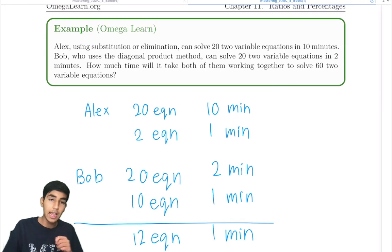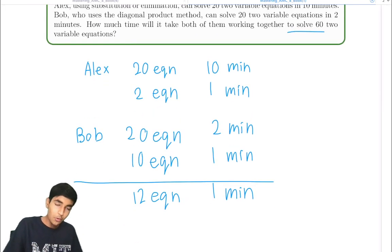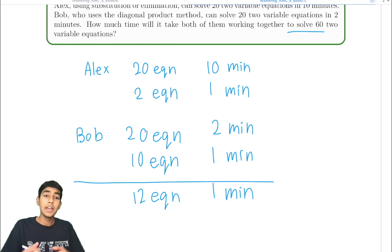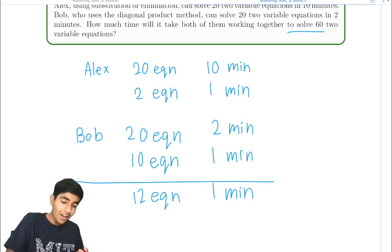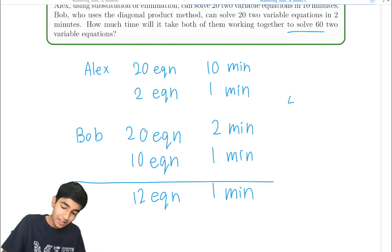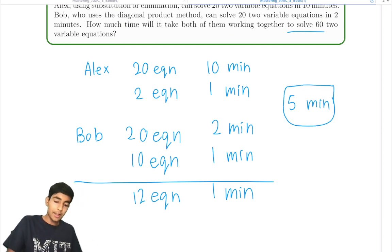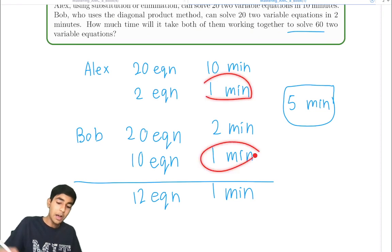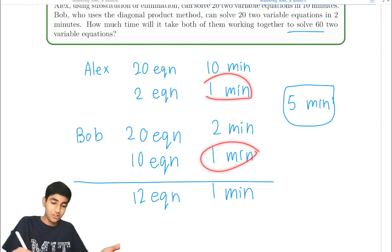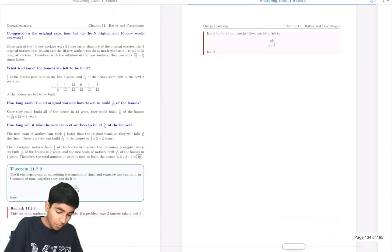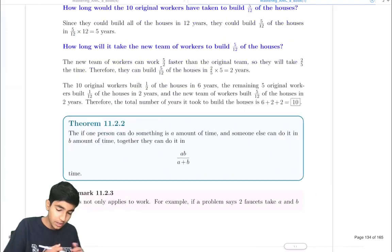So how long will it take to solve 60 equations? Well, 12 equations per minute — 60 is 12 times 5, so 5 minutes. The key idea in this problem: isolate the one-minute rate, add them up, and then it's just division.